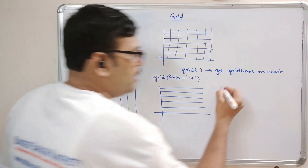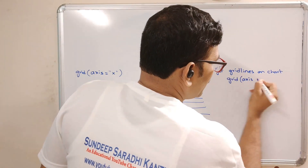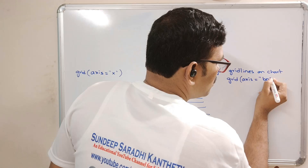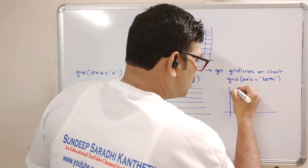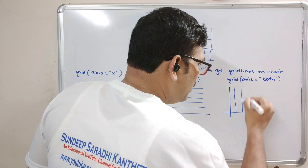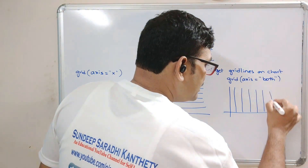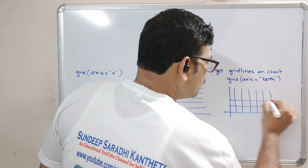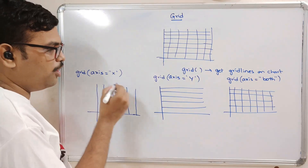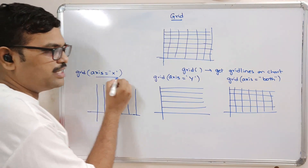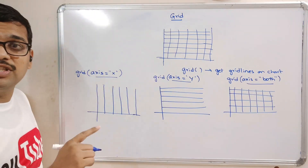And if you set grid axis equal to both, it will have both the x-axis and y-axis grid lines — the chart will appear like this. So there are three options: axis equal to x, axis equal to y, and axis equal to both. I will execute this and show you.